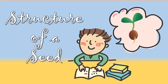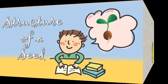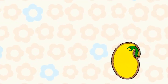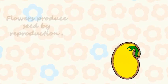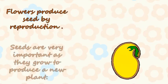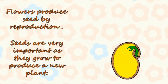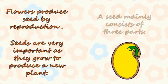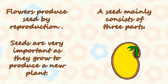Structure of a seed. Flowers produce seeds by reproduction. Seeds are very important as they grow to produce a new plant. A seed mainly consists of three parts.